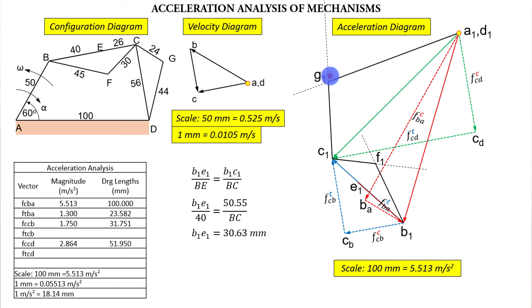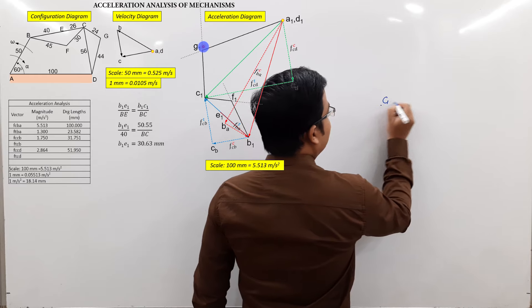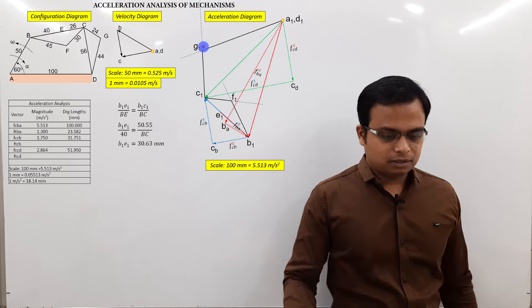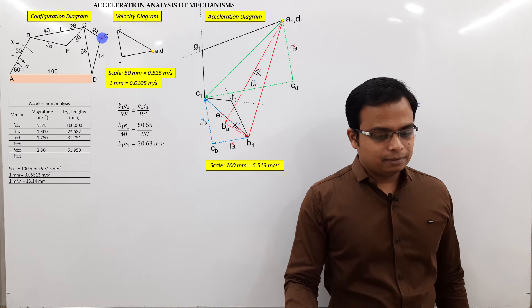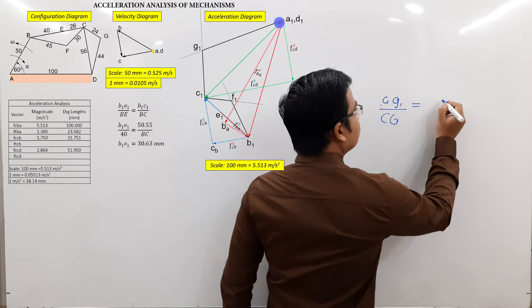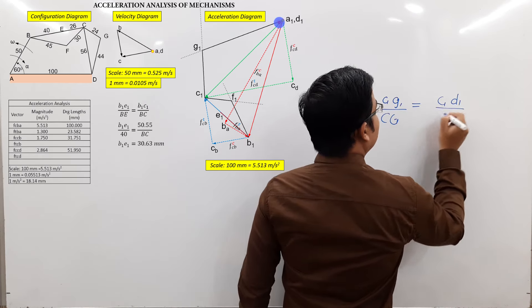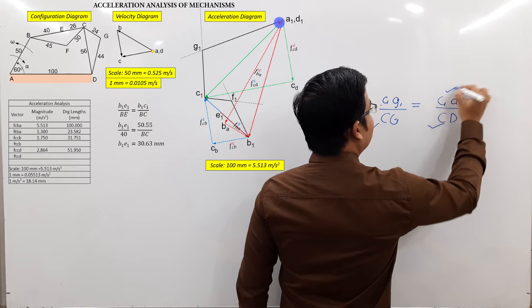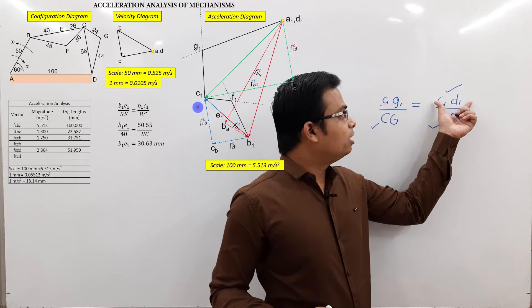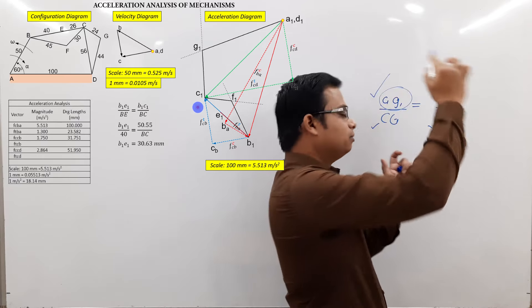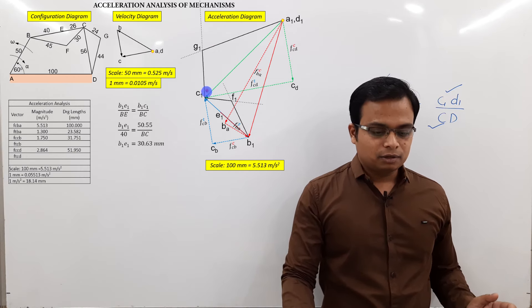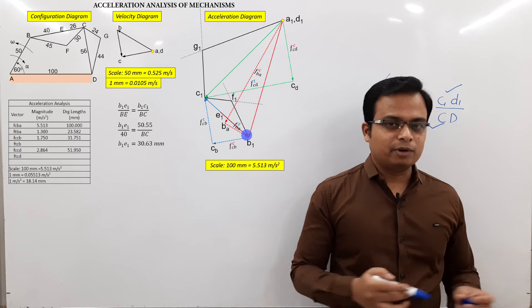Using the proportional approach: C1G1 / CG = C1D1 / CD. CG and CD are known from the configuration diagram, and C1D1 can be measured from the acceleration diagram. This automatically gives C1G1. The same applies to all portions. However, this approach is more time consuming than the angle transplant method.